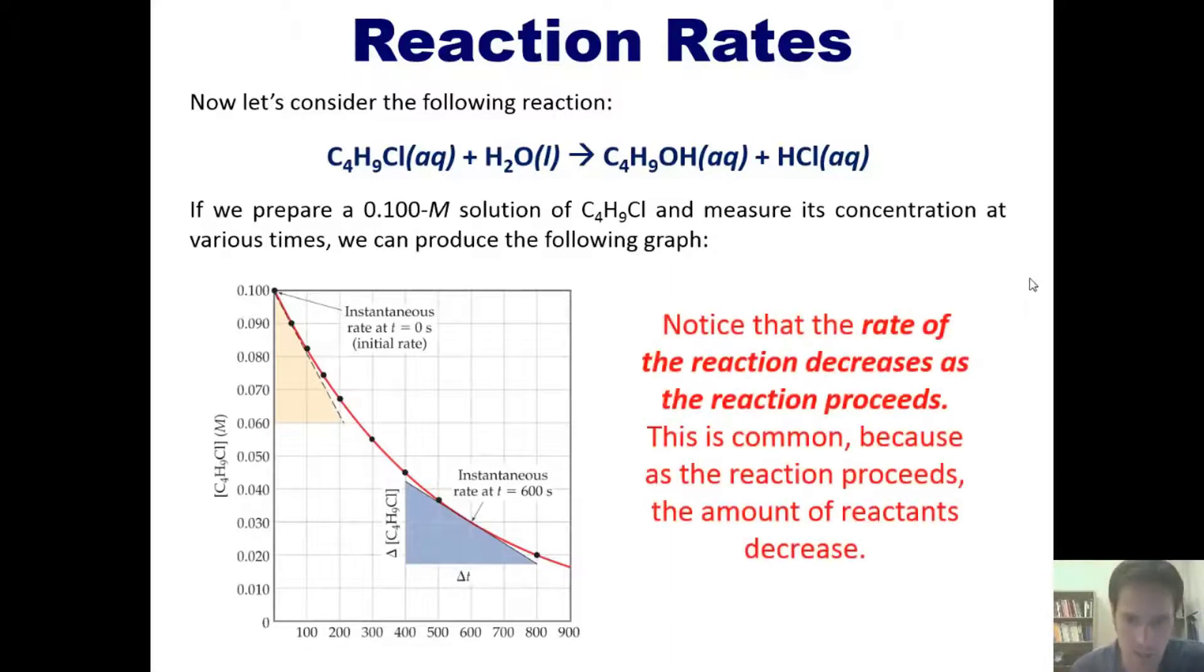You should notice, looking at this graph, that the rate of the reaction decreases as the reaction proceeds forward. In other words, right here at the very beginning, we have a starting concentration of 0.1 molar butyl chloride. The rate of the reaction is the rate at which that butyl chloride disappears over time.